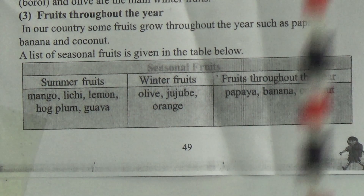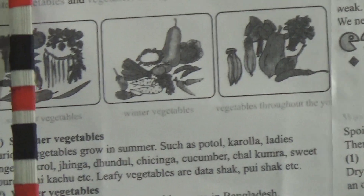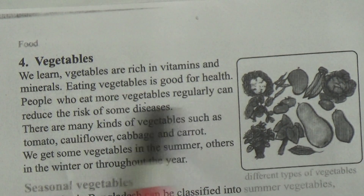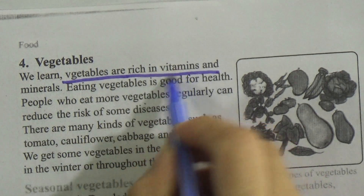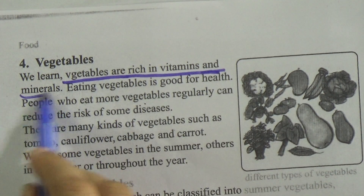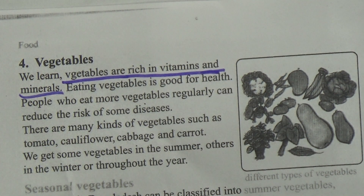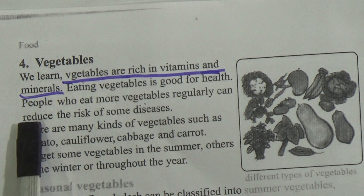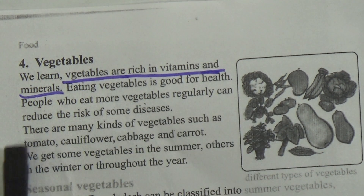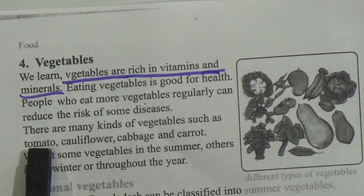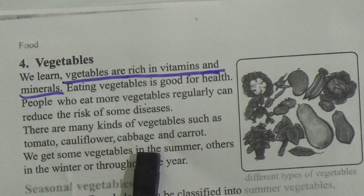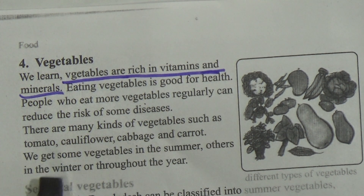Now come to vegetables. Vegetables are rich in vitamins and minerals. Eating vegetables is good for health. People who eat more vegetables regularly can reduce the risk of some diseases. There are many kinds of vegetables such as tomato, cauliflower, cabbage, and carrot. We get some vegetables in the summer and others in the winter or throughout the year.